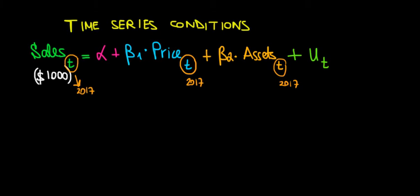Now what do we have? We have the constant. How do we read the constant? Well the constant is the expected value of sales when there is no effect from price and no effect from the assets. So if pricing doesn't affect our sales, if assets don't affect our sales, that is basically the average sales that we can expect. That's our constant.